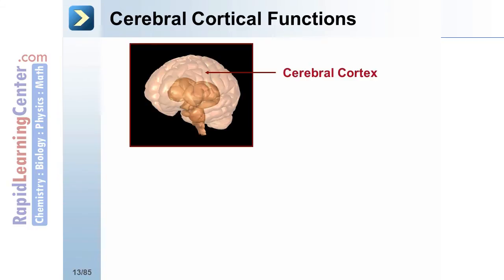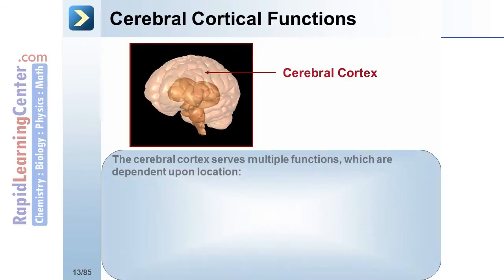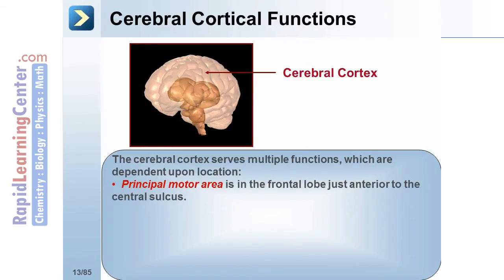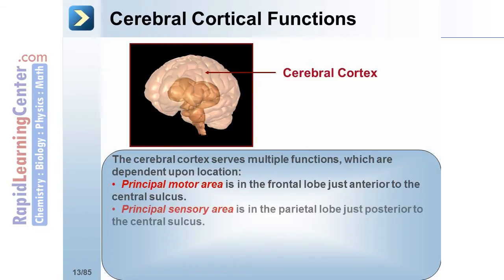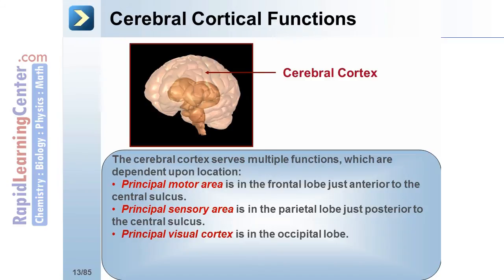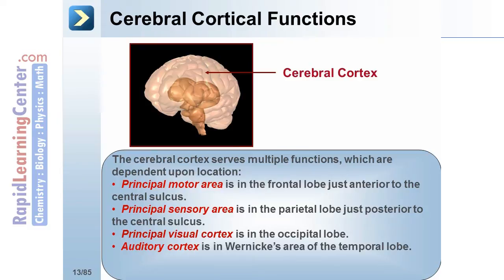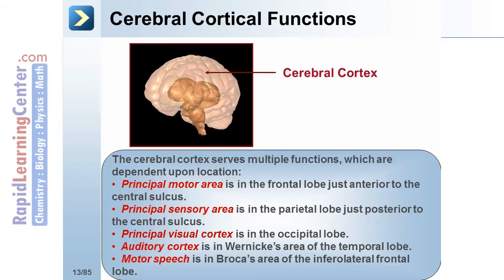Now let's take a closer look at the cerebral cortex. The cerebral cortex serves multiple functions dependent upon location. The principal motor area is in the frontal lobe just anterior to the central sulcus. The principal sensory area is in the parietal lobe just posterior to the central sulcus. The principal visual cortex is in the occipital lobe. The auditory cortex is in Wernicke's area of the temporal lobe, and motor speech is in Broca's area of the inferolateral frontal lobe.